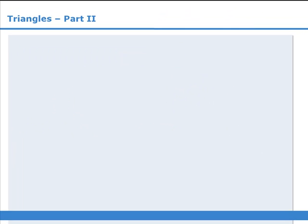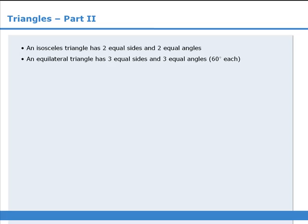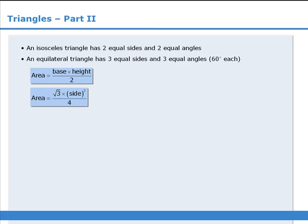In this lesson, we learned that an isosceles triangle has two equal sides and two equal angles. An equilateral triangle has three equal sides and three equal angles. We have a formula that can be used to find the area of any triangle, and we have a special formula that can be used to find the area of an equilateral triangle. Finally, the altitudes of isosceles triangles and equilateral triangles always bisect the base.